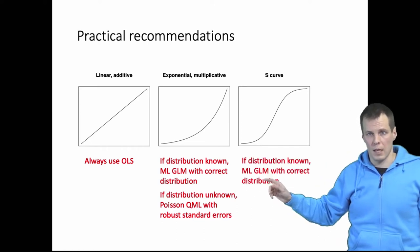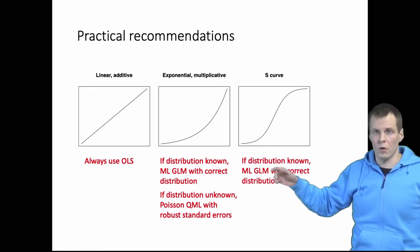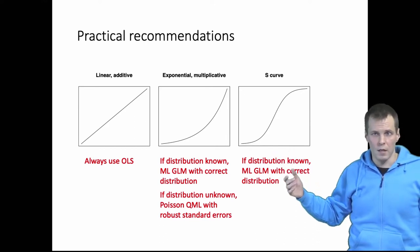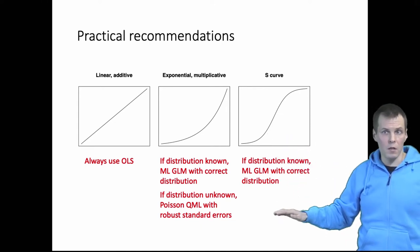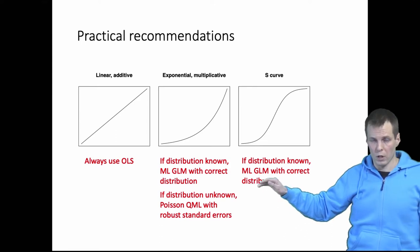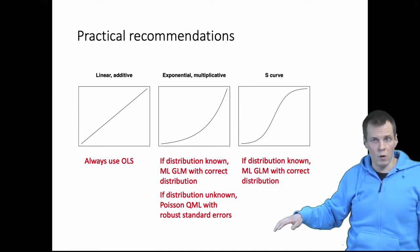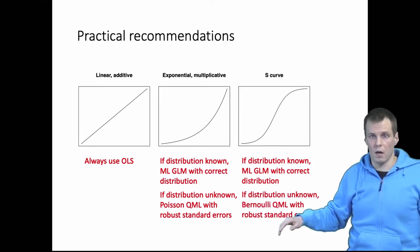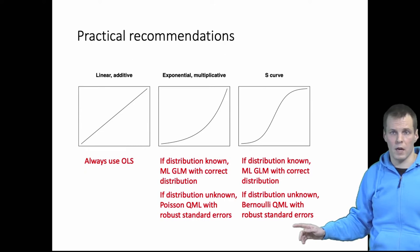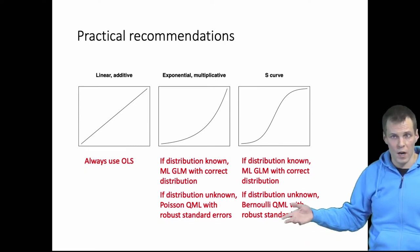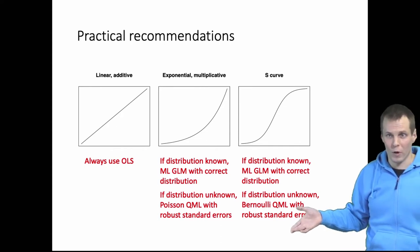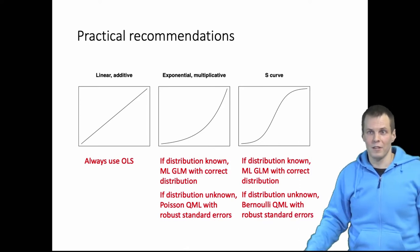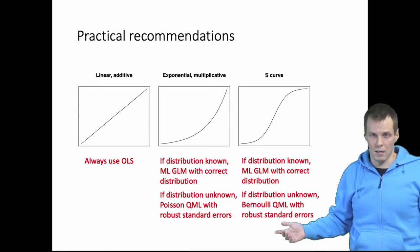For the S-curve models it's the same thing. If you know the distribution so if you know that you are using fractional response data and you know that the dependent variable is beta distributed given the predicted values then use a beta regression analysis so maximum likelihood GLM with the correct distribution. Otherwise if you don't know the distribution of the dependent variable then use Bernoulli quasi maximum likelihood with robust standard errors. So if you have fractional response data then basically I would always recommend that you use just the normal logistic regression analysis for that because it works. You would think that it doesn't but it actually does as long as this approach has been programmed into your computer software.